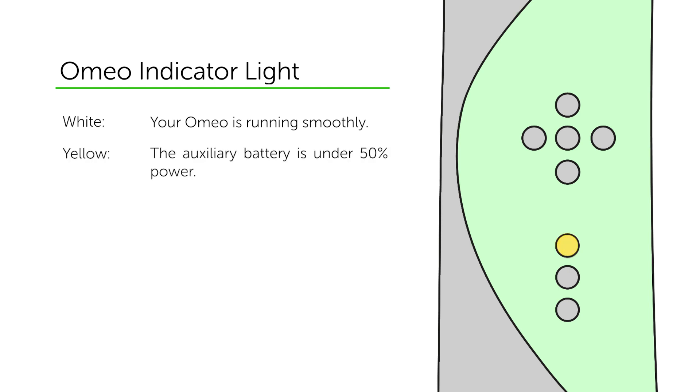The first light directly under the balance lights is the Omeo indicator light. It will flash different colours depending on the function. White is the colour your Omeo indicator light will most commonly be on. This is to show your machine is running smoothly and you are good to go.